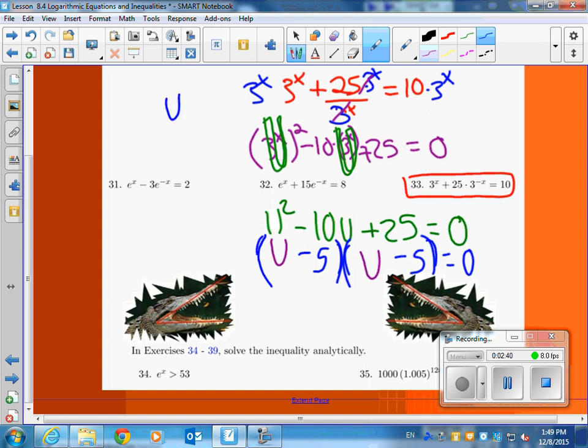So now if u is the same as 3 to the x, we can take the u out and put in, not an e to the x, but a 3 to the x. No, any letter you want. What's your favorite letter? D. D for Dan, of course. So D minus 5, D minus 5.